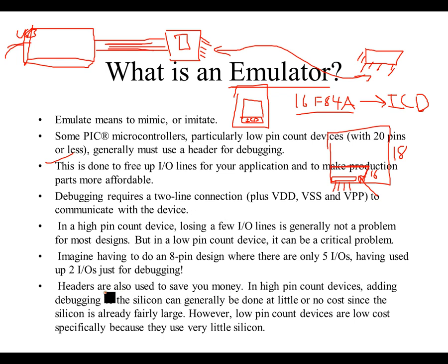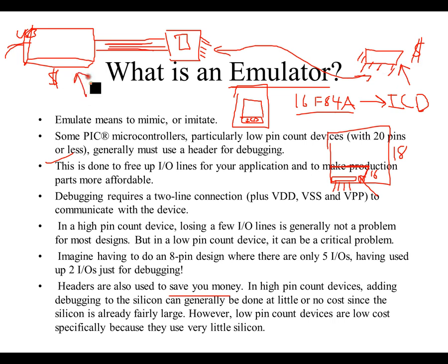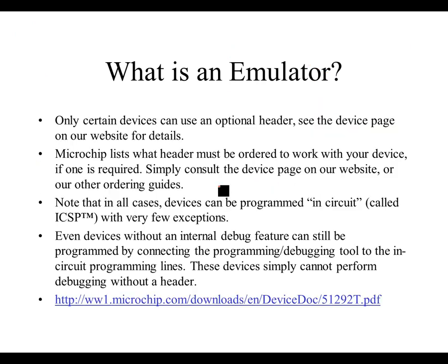As for headers — they can save money in the sense that if you're going into full production selling many chips, you save money by using chips without the debug silicon. But for developers, educators, and hobbyists, they actually have to spend more money. Microchip lists which headers must be ordered, and they even have a website where you can determine exactly what sort of hardware tools you need for your particular chip.